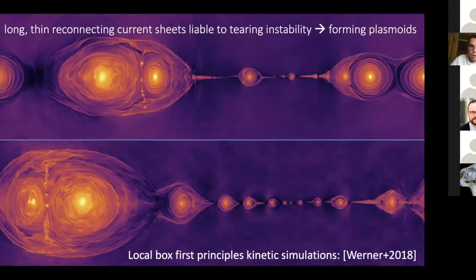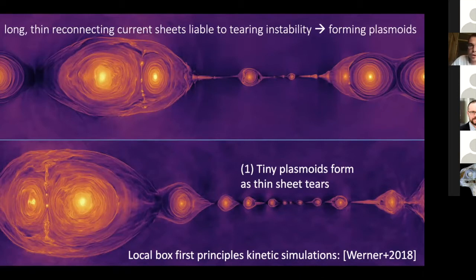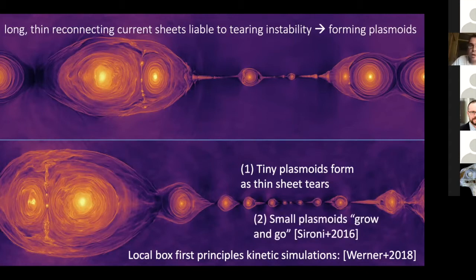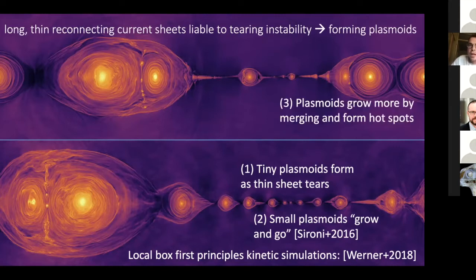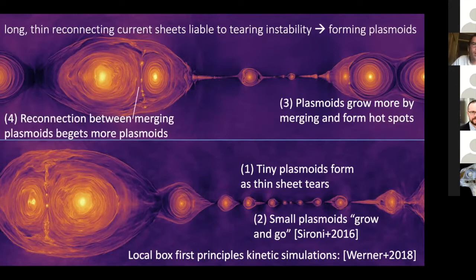In a local box we can solve this problem with kinetic simulation — we really simulate the electrons and positrons or electrons and ions and know exactly what's going on. We see that in such a current sheet, the current sheet tears and breaks up into tiny blobs we call plasmoids. Those plasmoids can grow, move, advect with the flow, and merge with each other into larger plasmoids that have a high temperature — you could call them hot spots. And this is an endless process because in between merging plasmoids you get a new current sheet that again becomes plasmoid unstable.